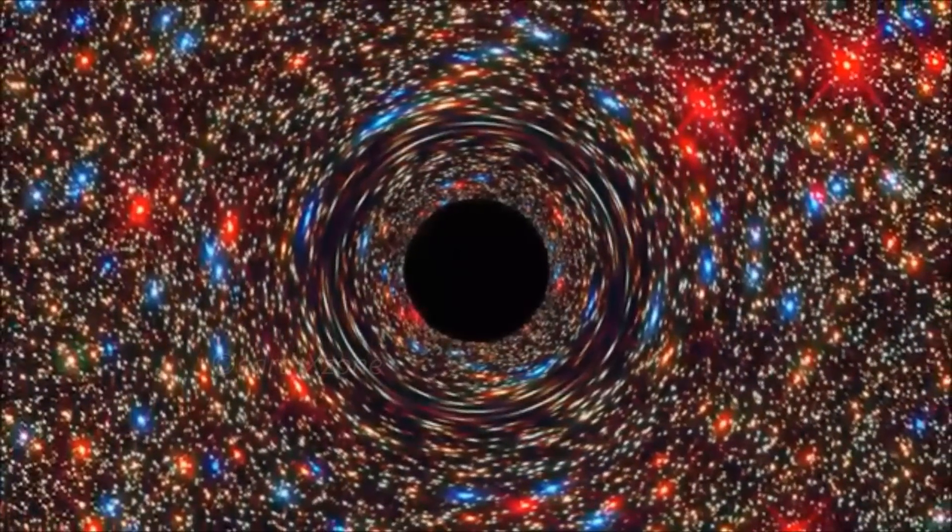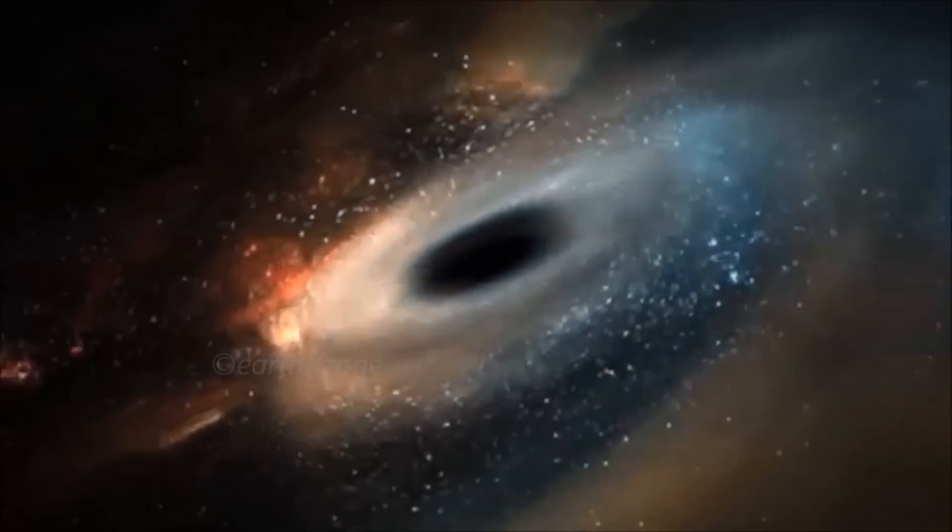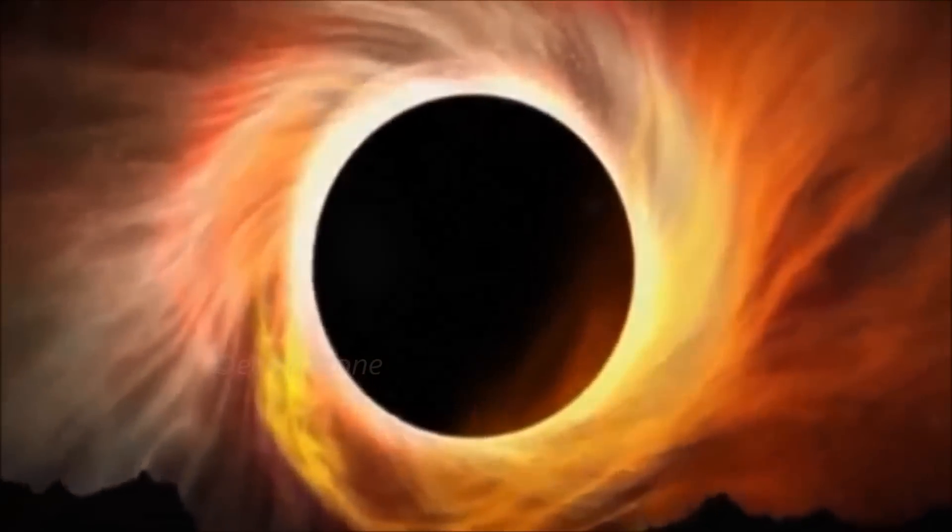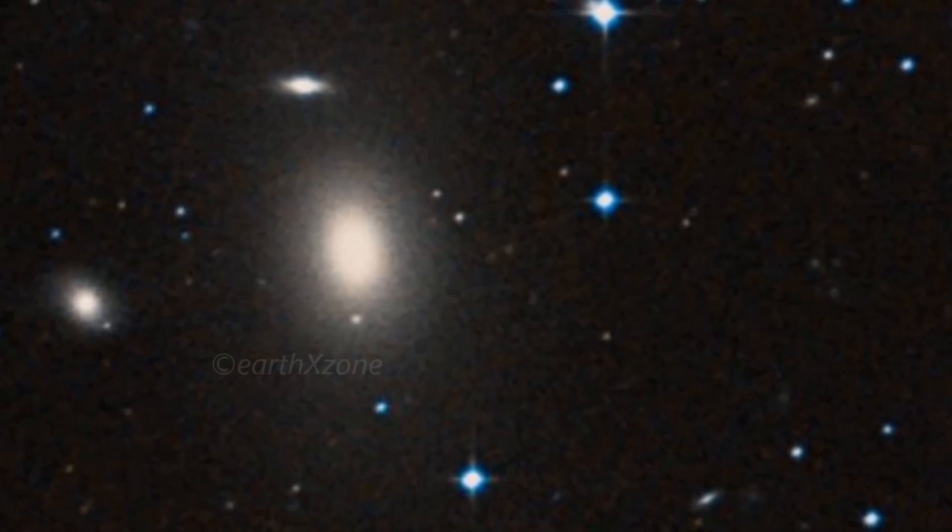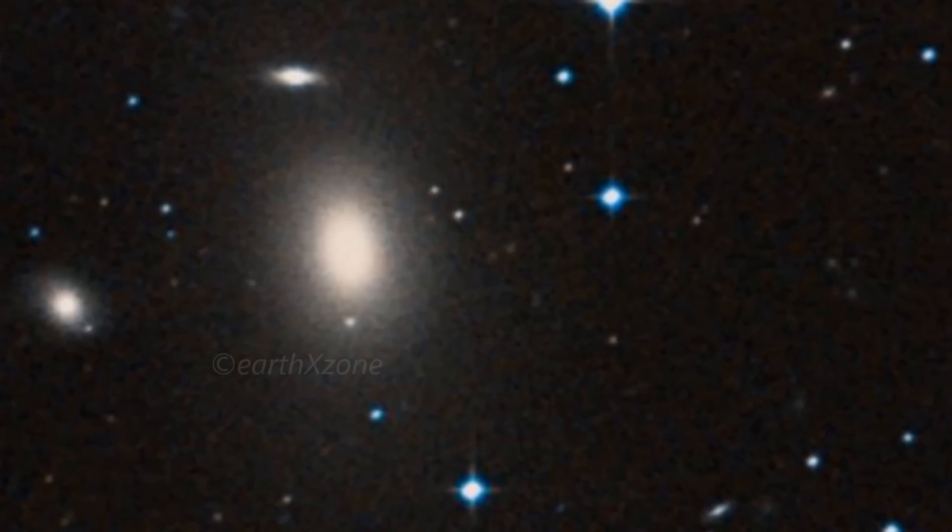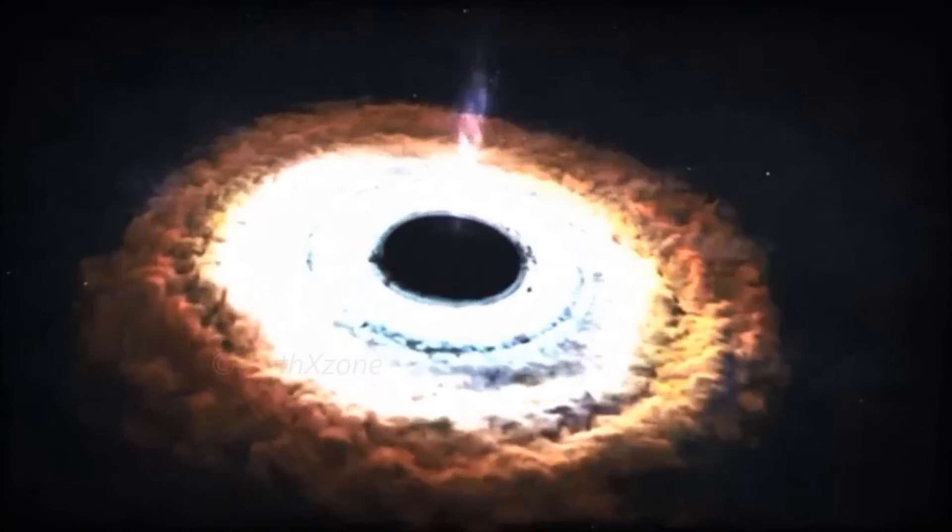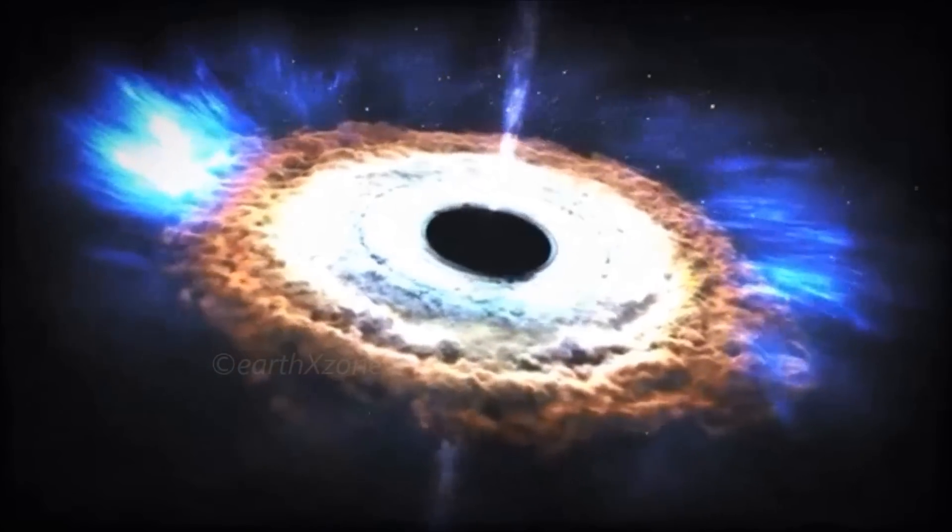The largest known black hole weighs 21 billion suns and is located in the Coma Galaxy Cluster, an area that is home to more than 1,000 galaxies, according to NASA. The observations made by NASA's Hubble Space Telescope and the Gemini Telescope in Hawaii have led astronomers to believe there could be more black holes also located in lesser-populated areas of the universe.